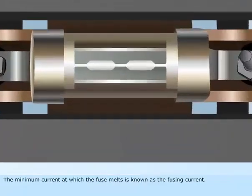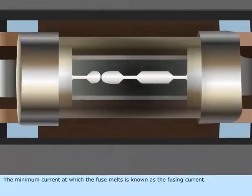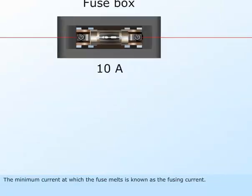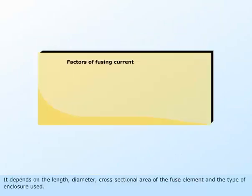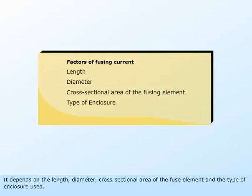The minimum current at which the fuse melts is known as the fusing current. It depends on the length, diameter, cross-sectional area of the fuse element and the type of enclosure used.